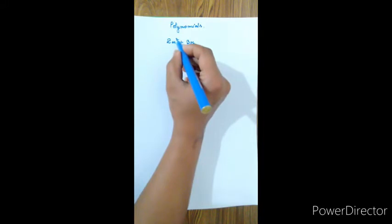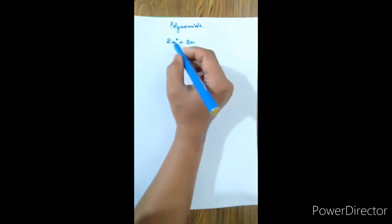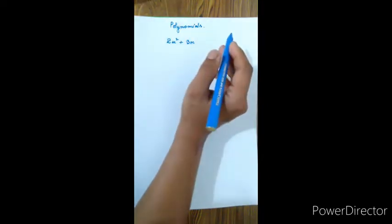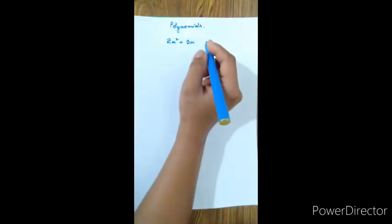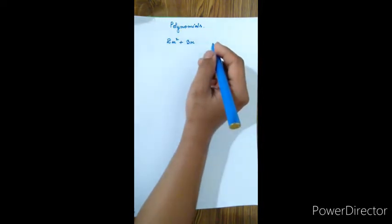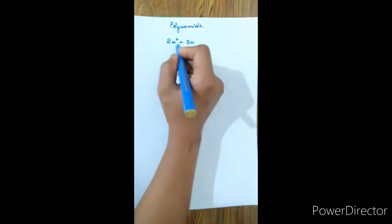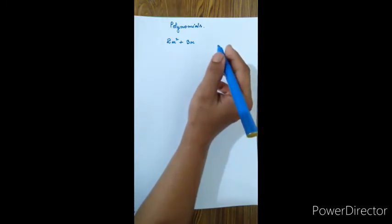In a polynomial, the variable must have positive integer exponents. Polynomials are algebraic expressions where the powers of the variable are positive integers. Polynomials are classified further based on this.